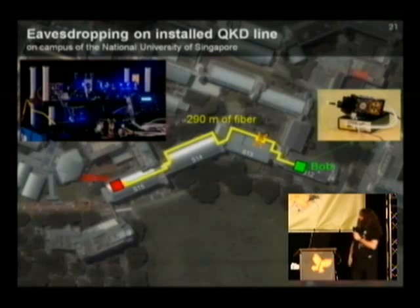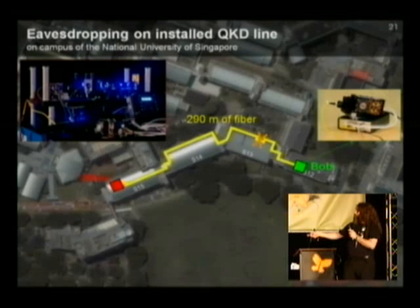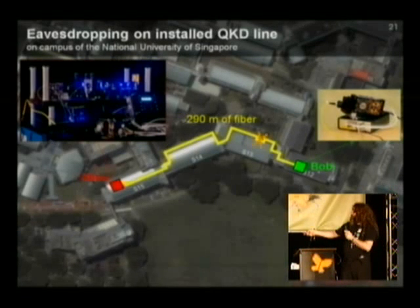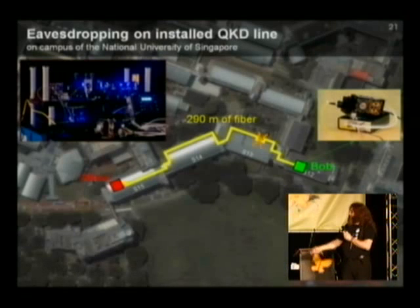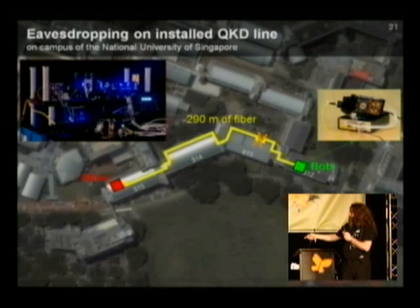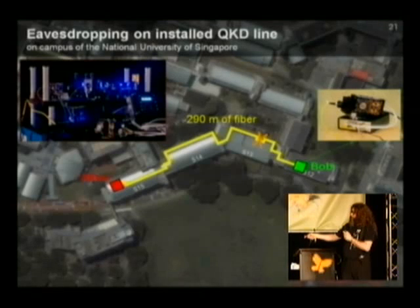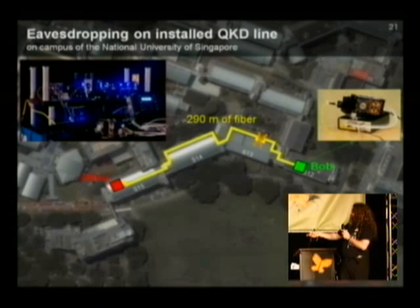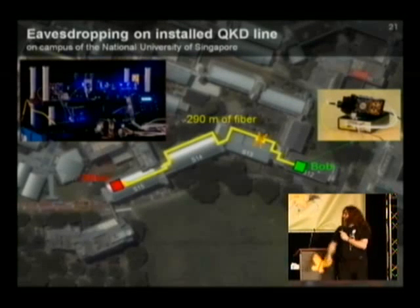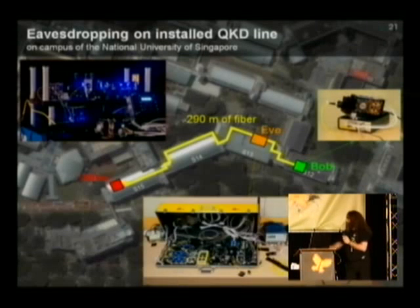Then we went to a strategically chosen location and disconnected the fiber — actually, there was a connector strategically placed there for convenience, though you can of course cut and re-connectorize the fiber. At this location, we inserted Eve in between Alice and Bob.